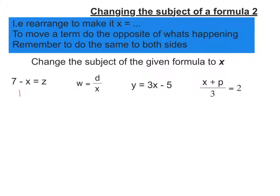It's actually easier if I add x to both sides here. So I'm going to be left with 7 on the left hand side and z plus x on the right hand side.